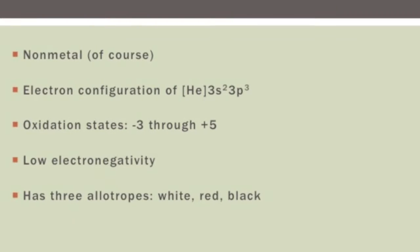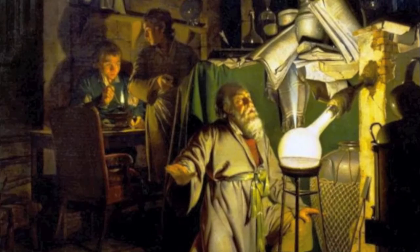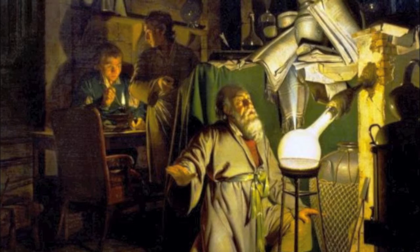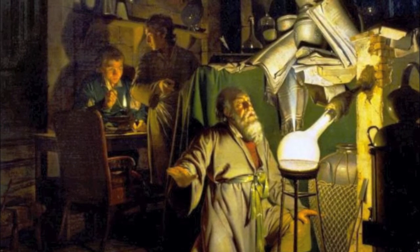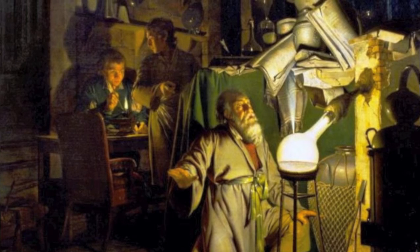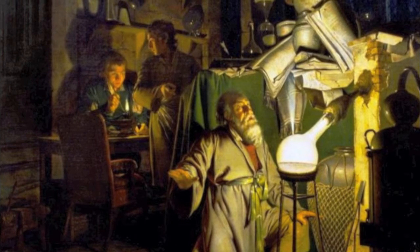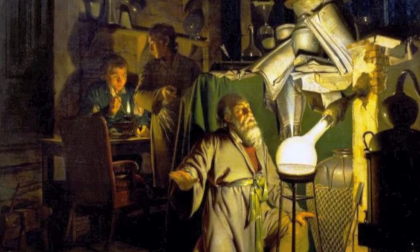These allotropes are white, red, and black. Phosphorus was discovered by the German alchemist Henning Brand, who was distilling urine in hopes of finding gold. Alas, he did not find his gold, but he discovered what we would refer to as white phosphorus.